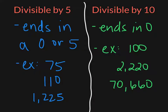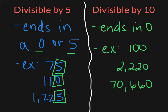Just to wrap up — if a number is divisible by 5, remember it has to end in a 0 or 5. Here are three examples with a 5 in the ones place, a 0 in the ones place, and a 5 in the ones place. The only two numbers that can be in the ones place are a 0 or 5. For 10, it's a little more simplified — it has to end in a 0. If a number ends in a 0, it is divisible by 10.